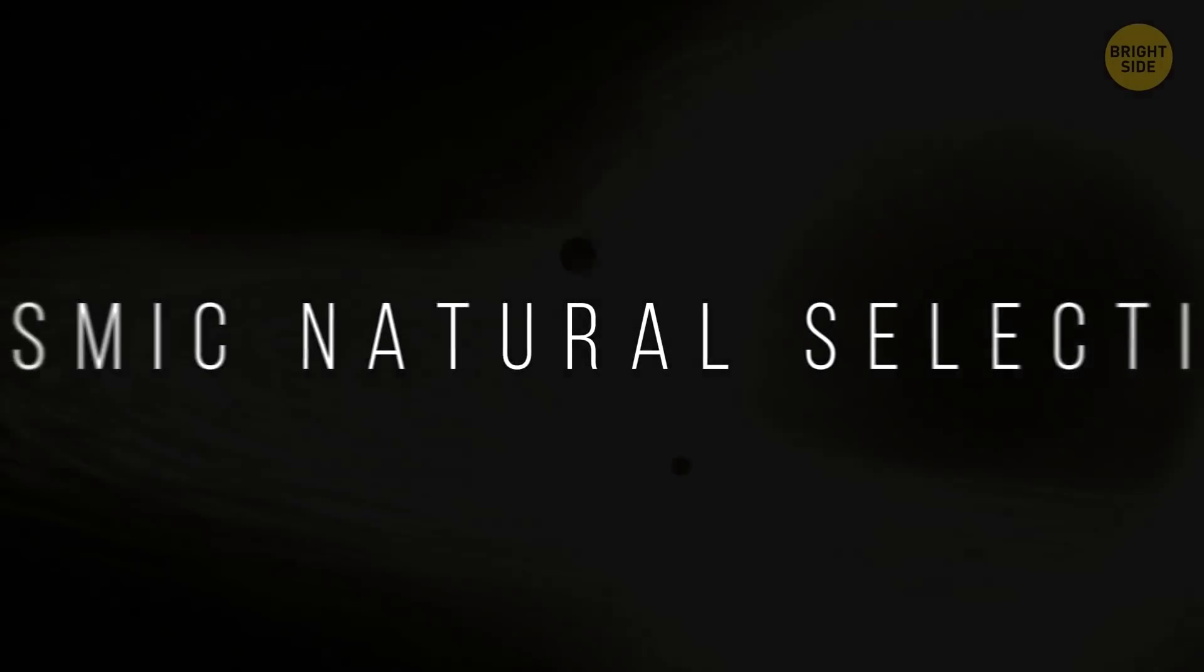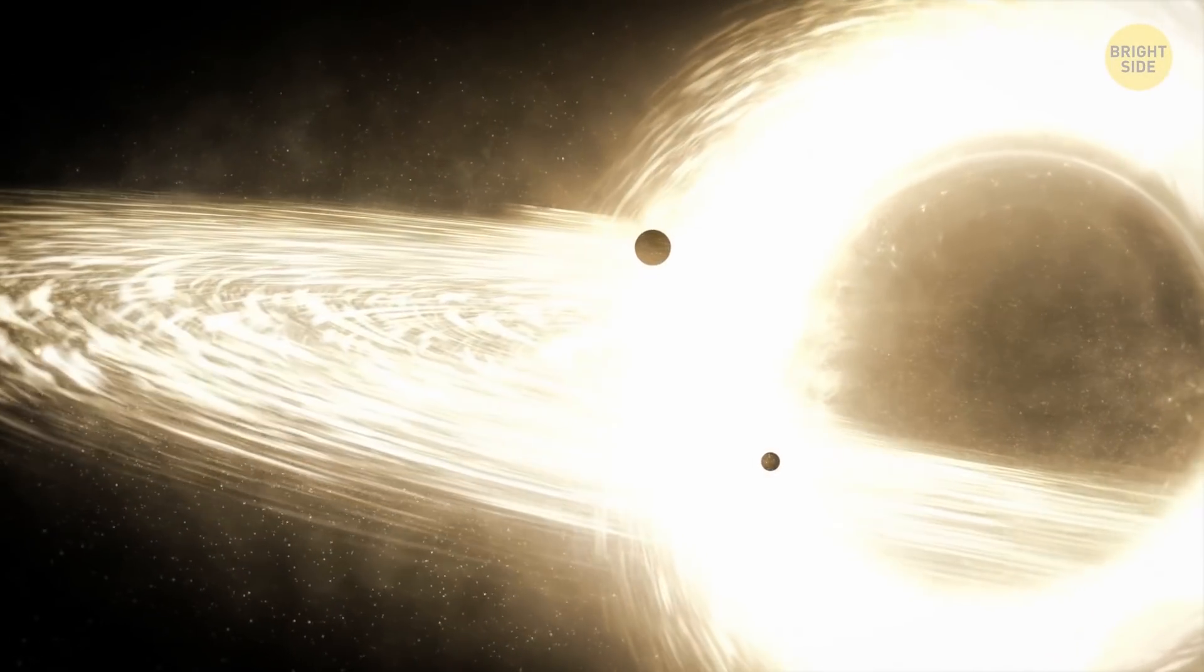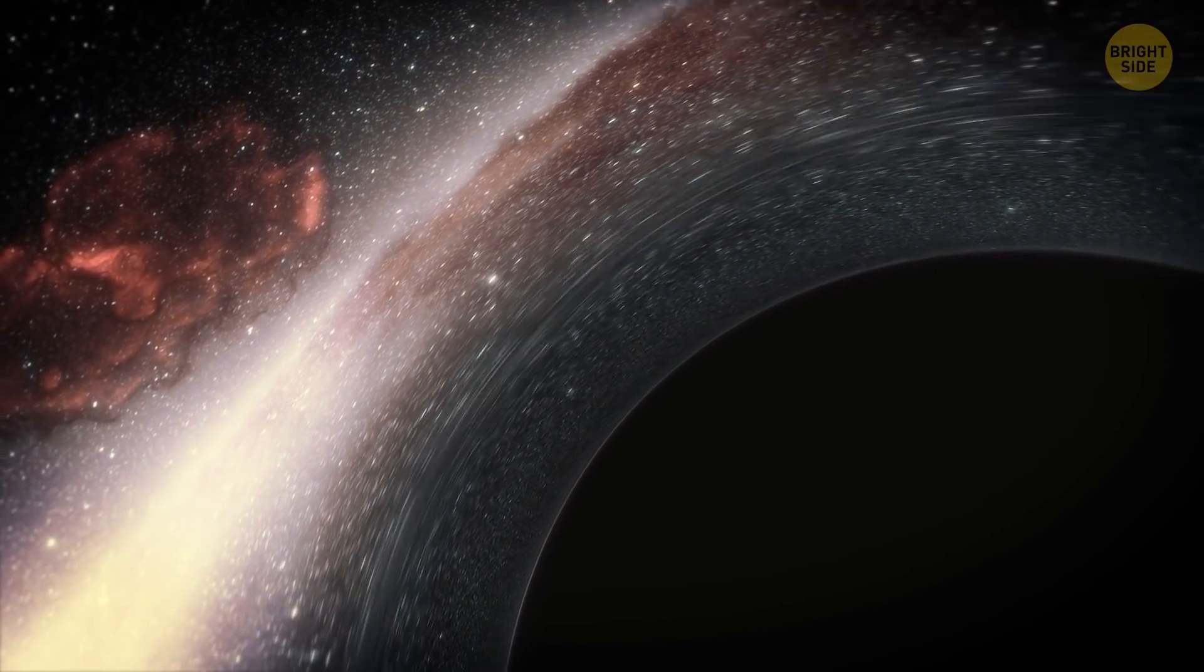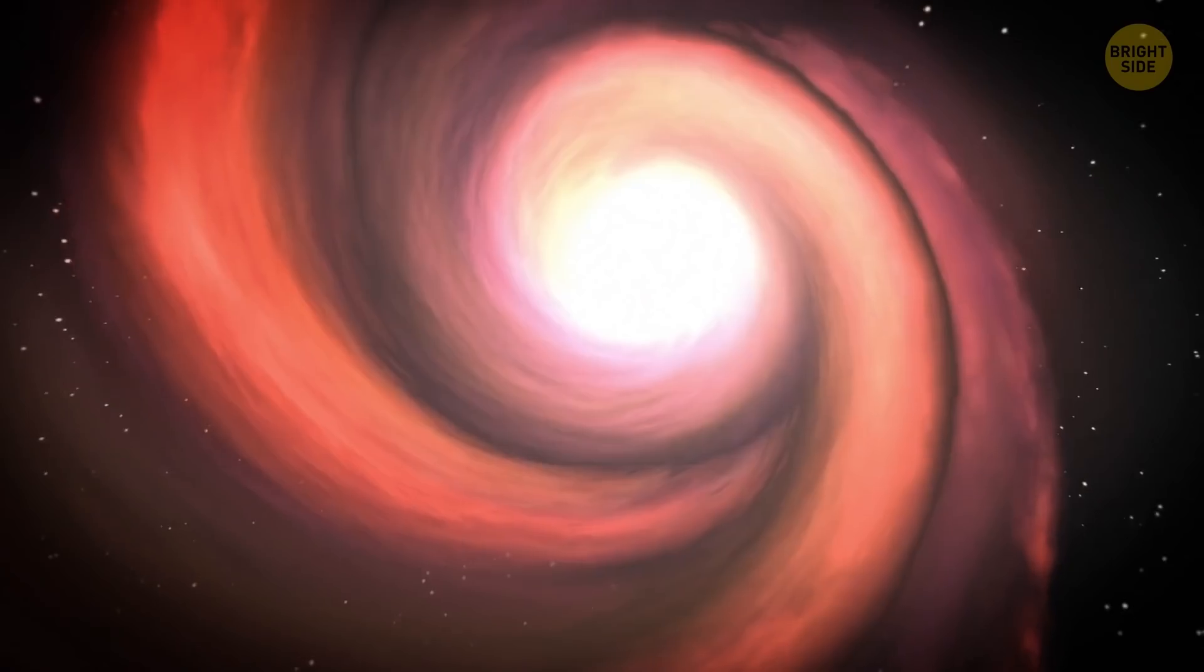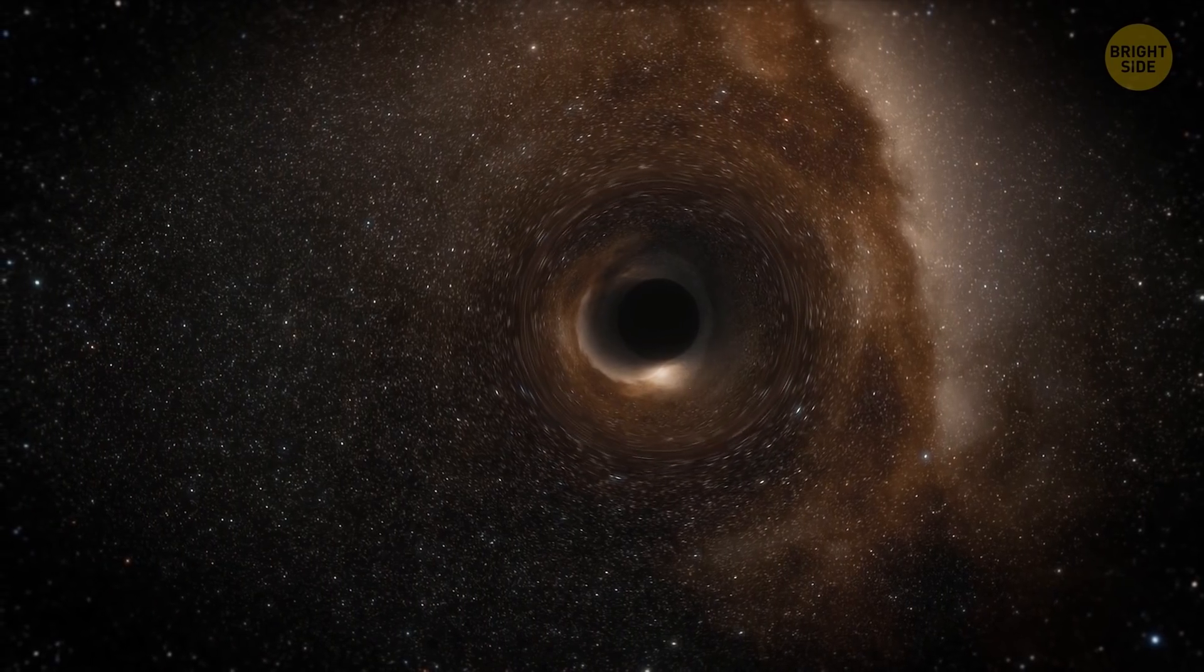Cosmic Natural Selection. Proponents of this theory suggest that a collapsing black hole created our universe, which contains black holes, which then create other universes on the other side. With each creation, a universe is a little different from the one the black hole existed in.